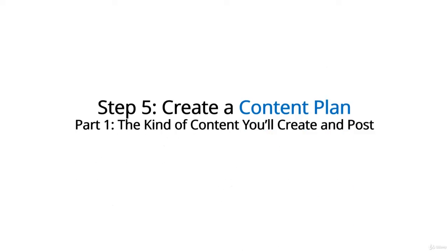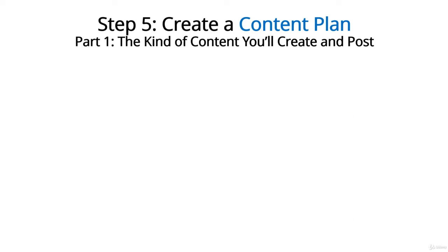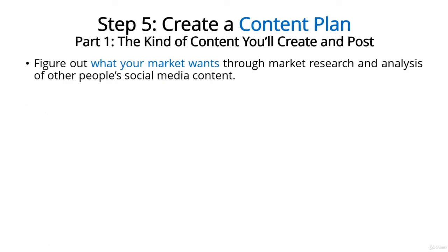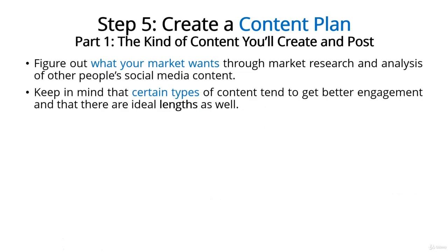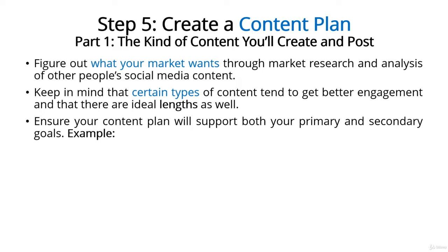Step 5: Create a Content Plan. There are two parts to consider. Part 1 — what kind of content will you create and post? The main points: figure out what your market wants using your market research; analyze other people's social media content to determine what topics and formats are most popular in your niche; and understand that certain types of content get better engagement. Graphics do better than text, and videos often do better than both. You'll also need to test the ideal length of content for yourself. In addition, create content that supports both your primary and secondary goals.